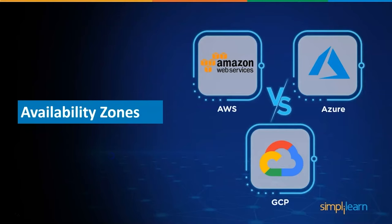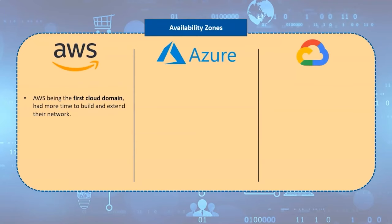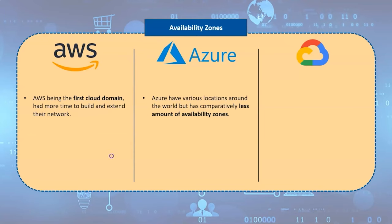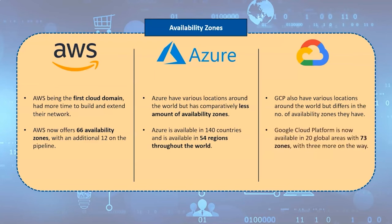Now let's have a look at the availability zones of these platforms. Because AWS was the first in the cloud domain, they have had more time to build and extend their network, but Azure and GCP both have various locations around the world. AWS now offers 66 availability zones with an additional 12 in the pipeline. Azure is available in 140 countries and 54 regions throughout the world. But Google Cloud Platform is now available in 20 global areas with three more on the way.